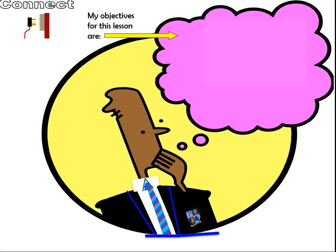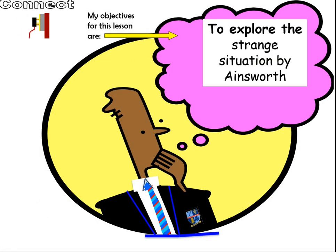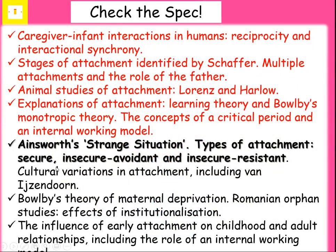Today we're going to move on to the next lesson, which is an exploration and description of the strange situation by Mary Ainsworth. This is a key study that you need to know a lot about. Looking at the specification, it's named on the spec with its own bullet point, which clearly suggests you need to know this in a lot of detail — you could get a 16-mark question on this, and it has already come up as one. The bullet point covers Ainsworth's strange situation and types of attachments.